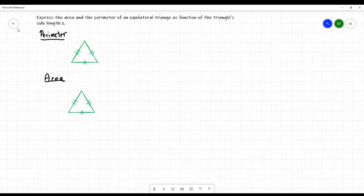So express the area and the perimeter of an equilateral triangle as a function of the triangle's side length x. So what is this question asking us? We have to express the perimeter and the area of the triangle based on the side length x. So we know right away that the side length is x, and we have another bit of information. We know that it's an equilateral triangle. So when it's an equilateral triangle, it means that all the sides have the same length.